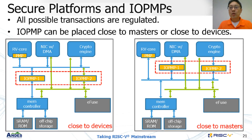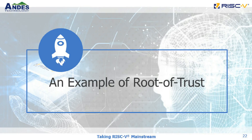We suggest that all possible transactions are regulated. Then, where should we put IOPMPs? There are several ways. We may put them close to devices or close to masters, as long as every transaction can be checked by at least one regulated checker. Now, I am using an example to demonstrate how to build a root of trust by PMP, IOPMP, and security boot.